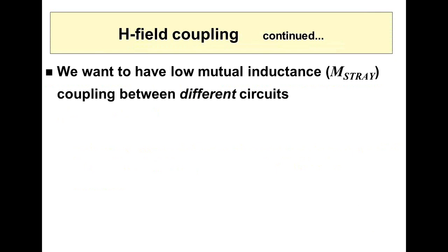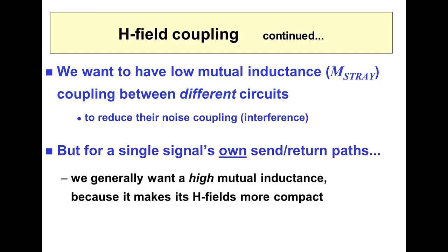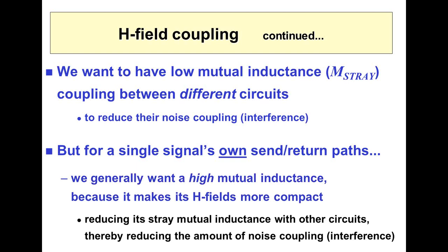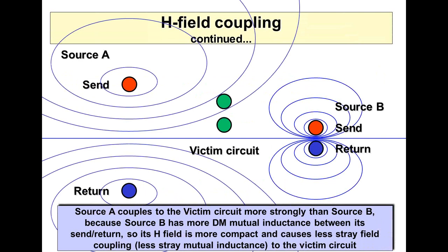Obviously we want low mutual inductance between different circuits to reduce noise coupling. For the signal's own send and return paths, we want high mutual inductance, because we want to make the magnetic fields more compact — high field strength where we want our signals to flow, and low field strength everywhere else. When you have high mutual inductance between the signal's own send and return paths, it reduces the coupling to other circuits. Just look at the magnetic field of source A and source B — for source A the magnetic field is much more compact and intense in the region around the conductors, so it doesn't couple as much with the victim circuit. We've reduced the stray coupling by reducing the loop area of the send and return. Ideally we'd twist these, make them a twisted pair — we can do this in wires, though it's very difficult to twist printed circuit traces.